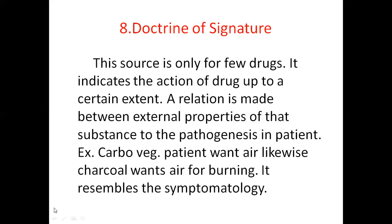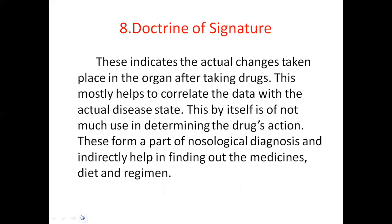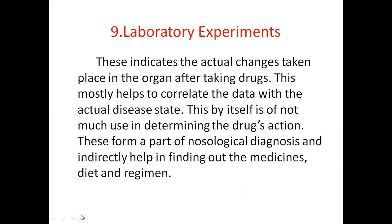Another example is walnut for diseases of the brain — the shape of the walnut resembles the shape of the brain. Next is laboratory experiments. These indicate the actual changes taking place in organs after taking drugs. This mostly helps to correlate data with the actual disease state, and indirectly helps in finding out the medicines, diet, and regime.